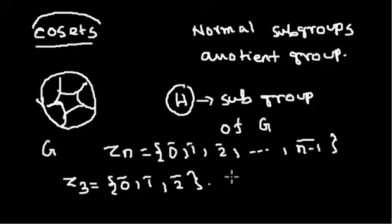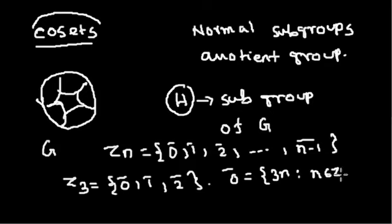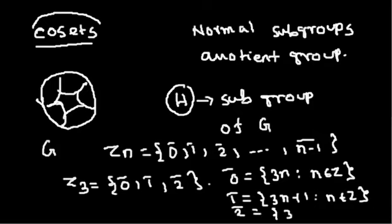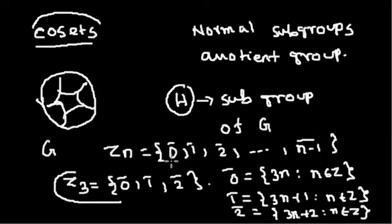What is 0̄? 0̄ is the collection of all integers that, when divided by 3, give remainder 0. So 0̄ is the collection of all integers of the form 3n, where n belongs to Z. Similarly, 1̄ is the set of integers of the form 3n+1, and 2̄ is the set of integers of the form 3n+2. We can learn the structure of the whole set of integers by learning the structures of these classes 0̄, 1̄, 2̄.